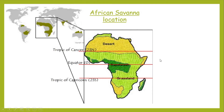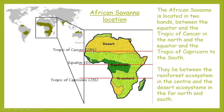What I'd like you to do is draw a sketch map to show the location of the African savannah grassland. Put the outline of the African continent, colour on the light green area, and then add the Tropic of Cancer in the north, the equator, and the Tropic of Capricorn in the south. Then write a couple of sentences to describe its location — it's not along the equator like rainforests. The African savannah is located in two bands: between the equator and the Tropic of Cancer in the north, and the equator and Tropic of Capricorn in the south. They lie between the rainforest and desert ecosystems to the far north and south.